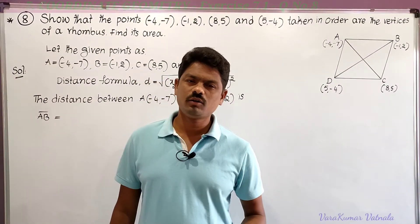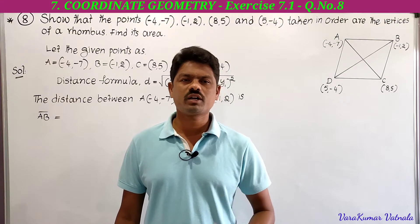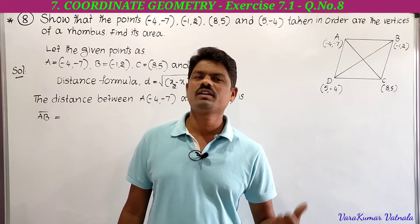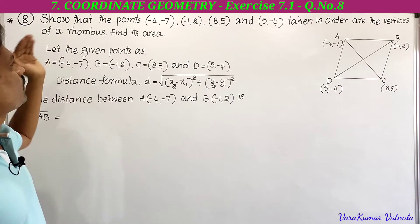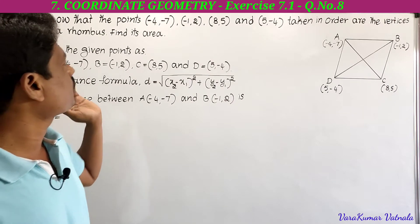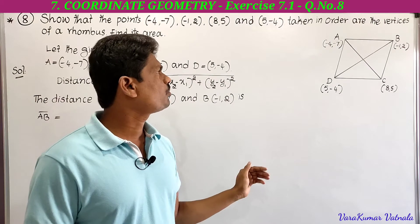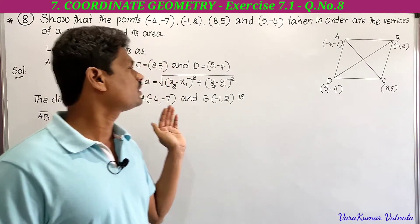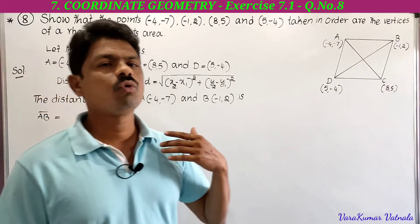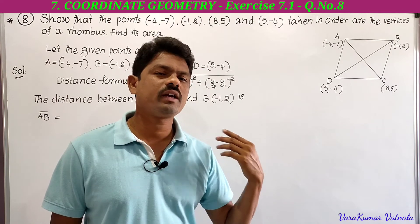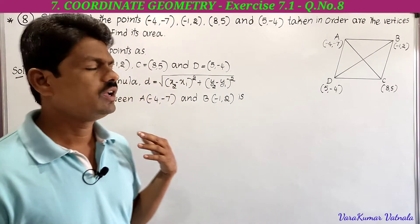Hi, hello, welcome to my channel Learn More Math. Today we are going to solve a problem from the seventh chapter, Coordinate Geometry, 7.1, eighth problem. The problem asks: show that the points (−4, −7), (−1, 2), (8, 5), and (5, −4), taken in order, are the vertices of a rhombus. Find its area.